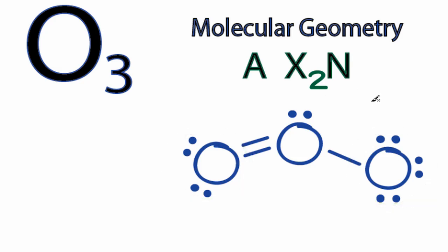And N, that's the number of pairs we have of non-bonding valence electrons. We have one pair. So we have AX2N1.